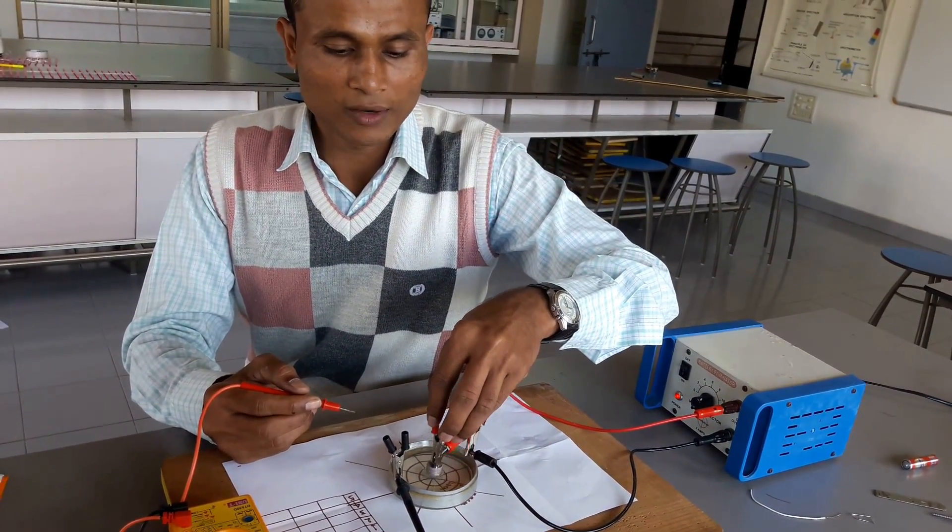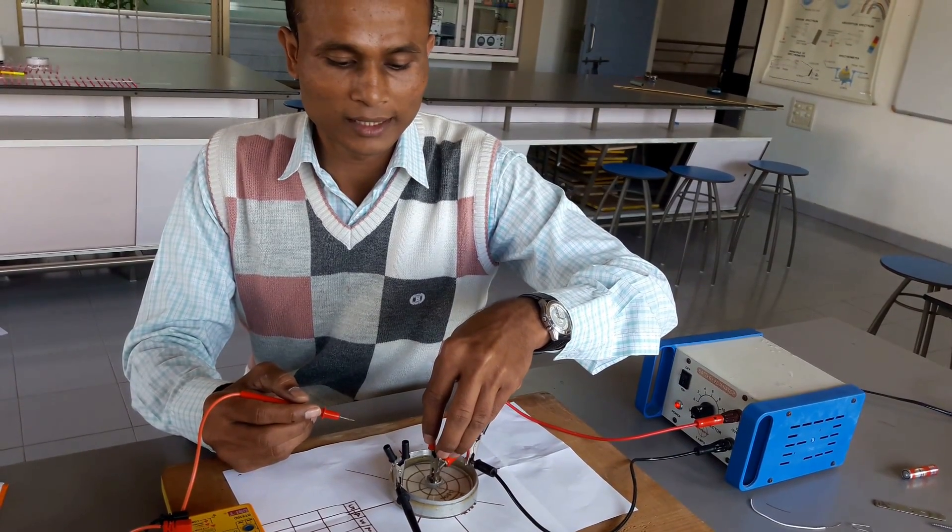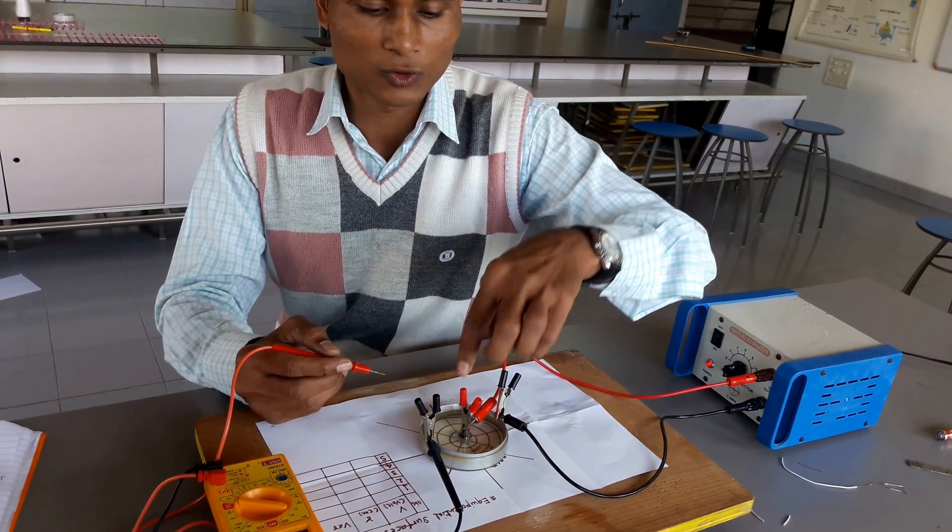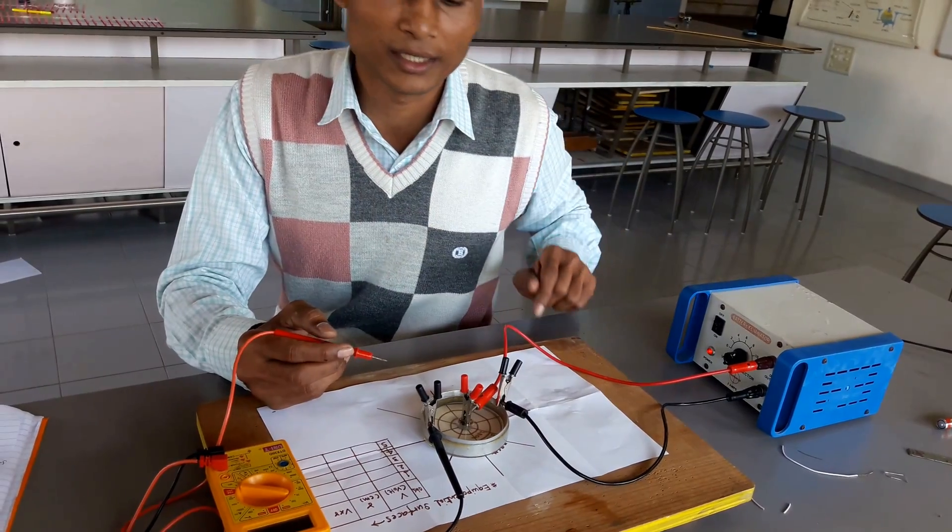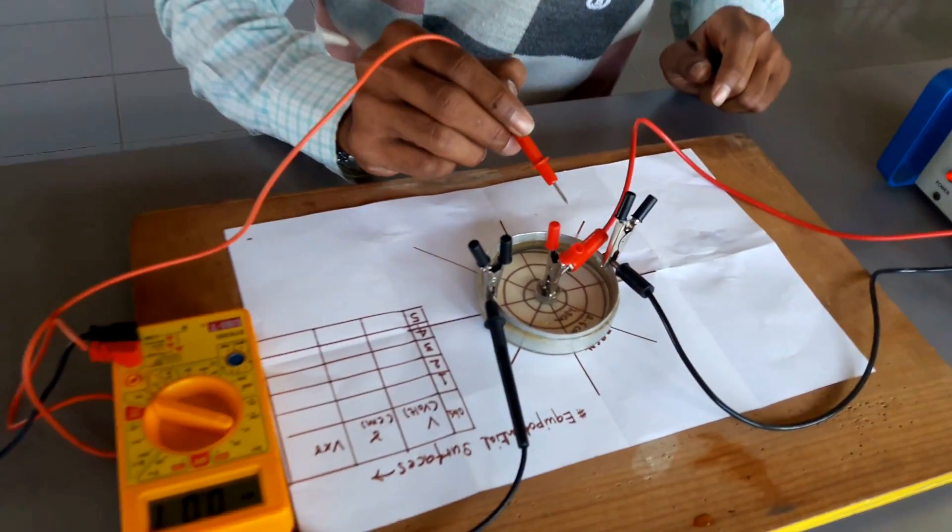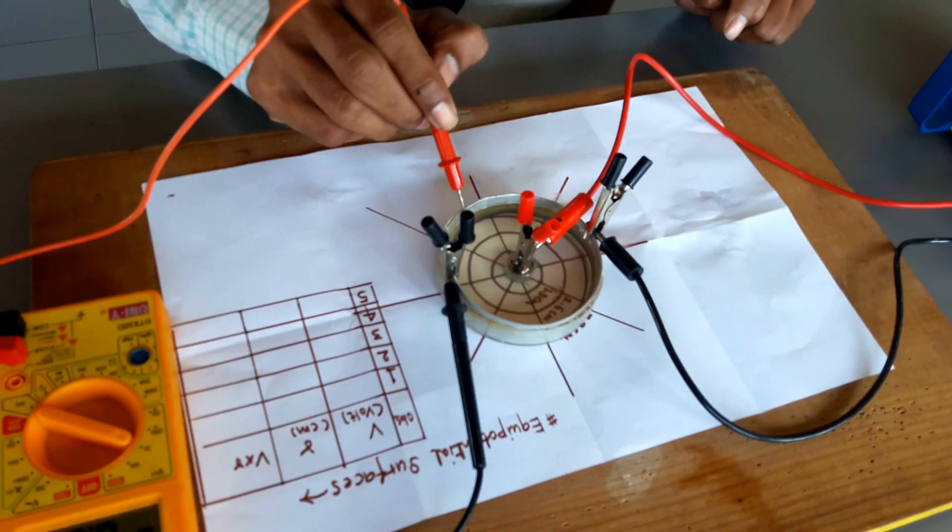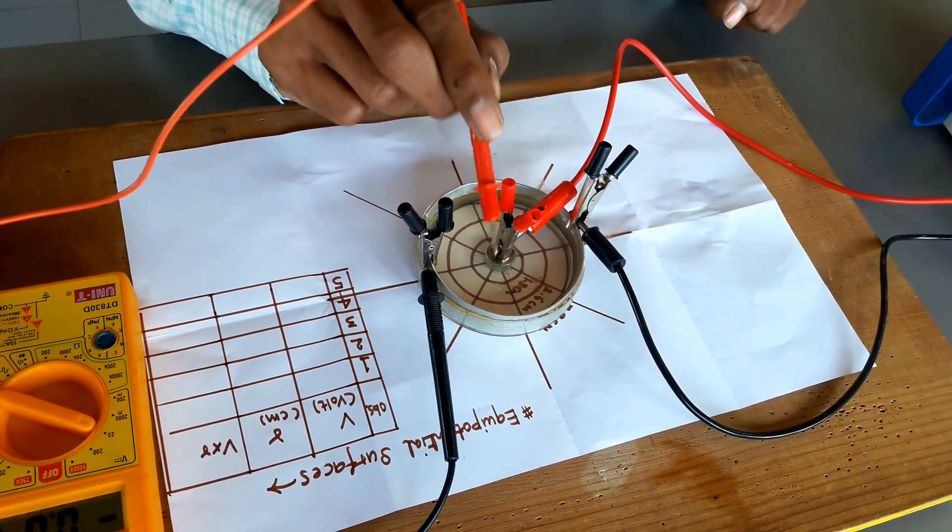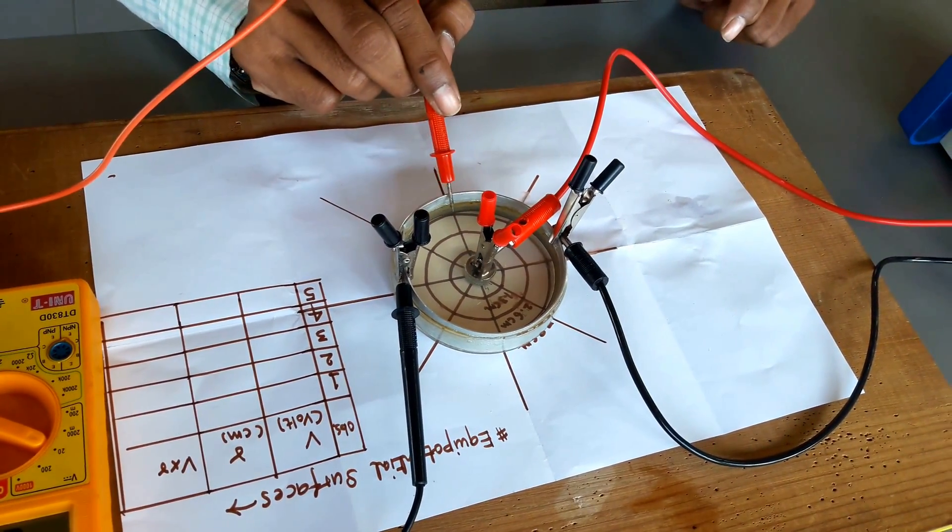Here we have kept a magnet so that this crocodile clip will remain steady. So basically we have applied potential difference between the ring. This is an aluminum ring, circular aluminum ring.